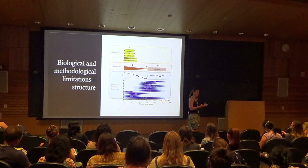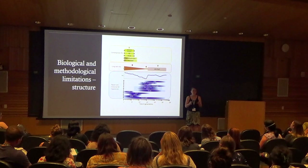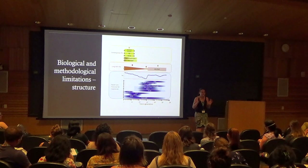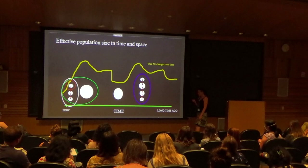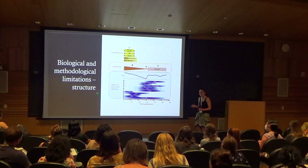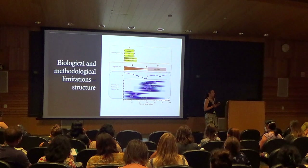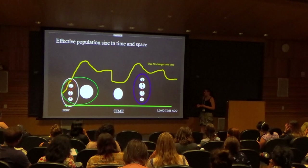Another thing that can influence demographic inferences differently across methods is selection — I won't go into details here, but if anyone is interested in the influence of balancing selection and structural variance of effective population size, I'm happy to discuss that afterwards. What I want to point to here is structure — it is really important to keep in mind when you interpret effective population size and effective population size trajectories.